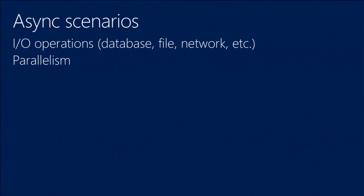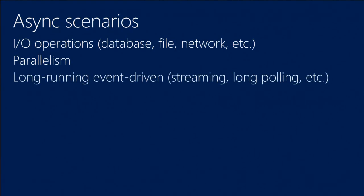Then there's parallelism — you can use async and await to do parallel programming. And there is actually a third scenario, which is long-running event-driven. This is where you would do streaming — some data comes in, you process it, then more data comes in, and you don't want threads sitting around waiting. You want the server to wake up, do some work, go to sleep, and not keep using up resources. This long-running event-driven is kind of what SignalR is doing in the background.